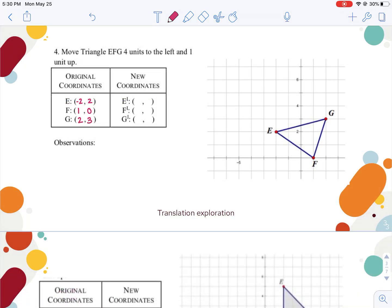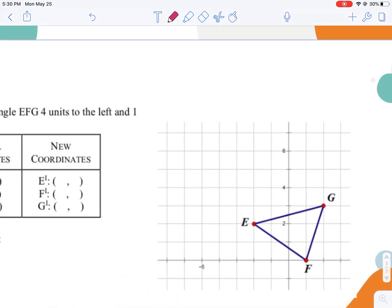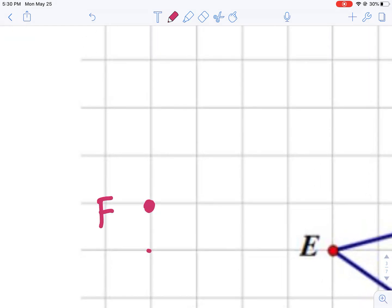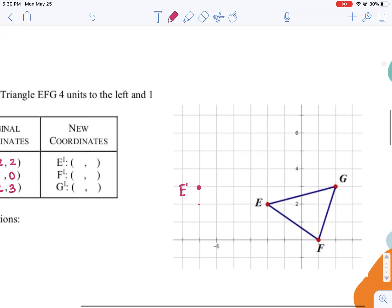Now I'm going to take each one of those points and move it four to the left and one up. So I'm taking point E and I'm going 1, 2, 3, 4 over, one up, and I'm going to label that as E prime. I'm going to do the same thing with F, move it over 1, 2, 3, 4, and up 1 and label that F prime. And with G, I'll move it over 1, 2, 3, 4, and up 1 and label that point G prime.